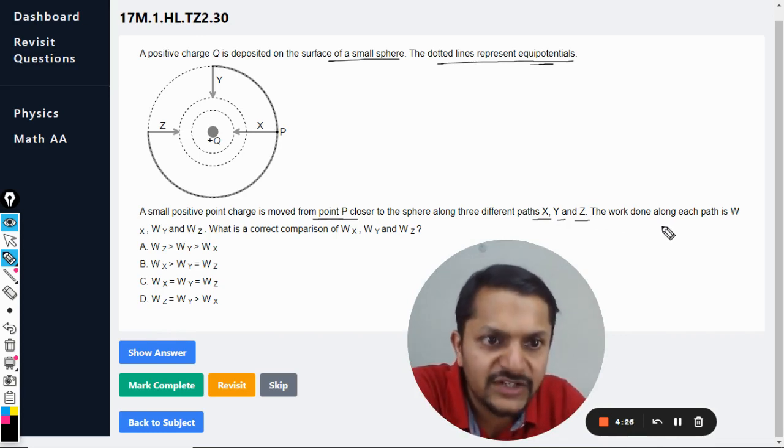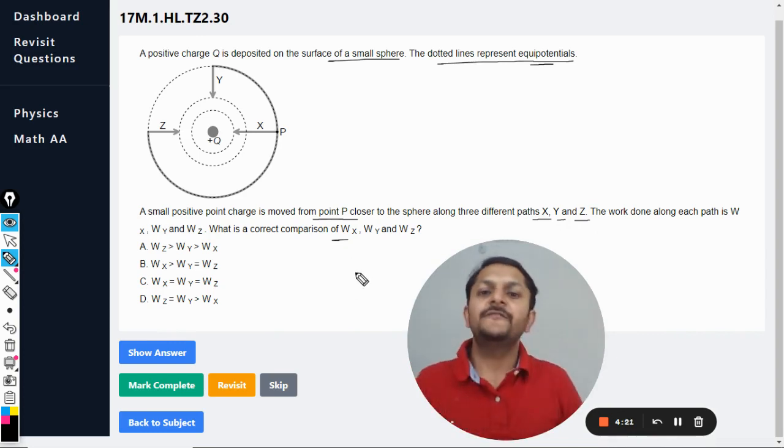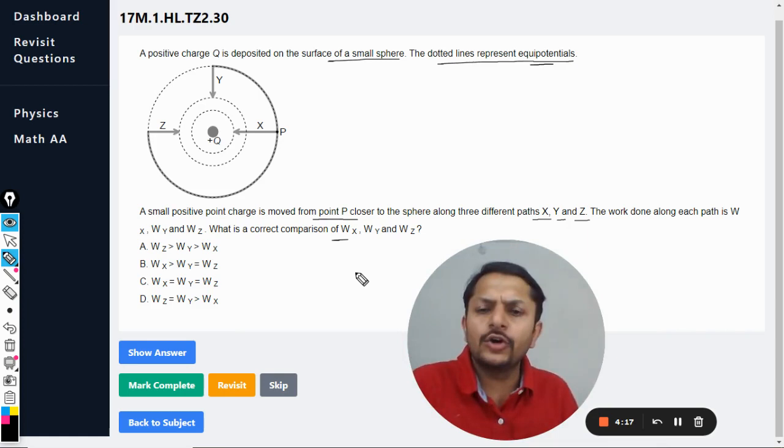The work done along each path is WX, WY, and WZ. What is the correct comparison for WX, WY, and WZ? Okay, so let's see.